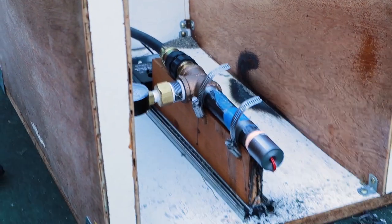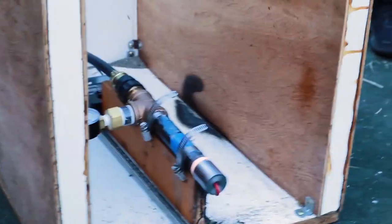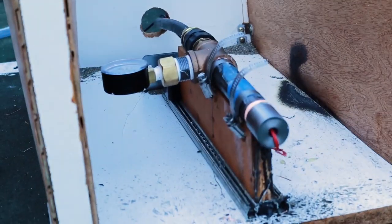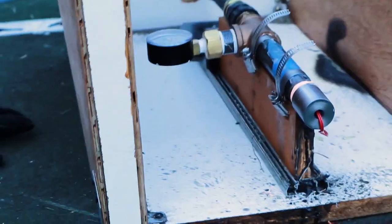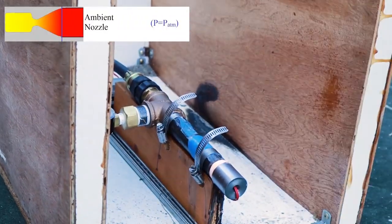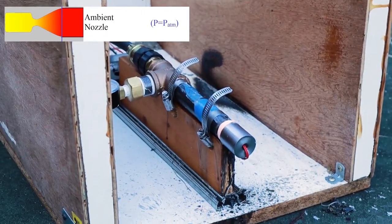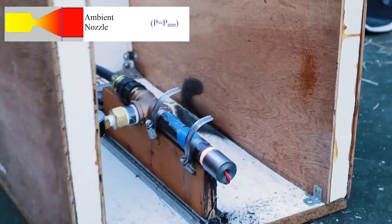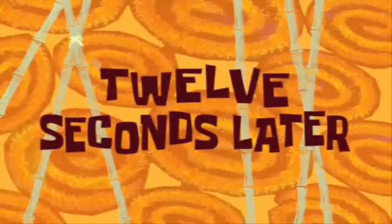Okay, this is trial seven with the theoretically perfectly expanded nozzle that goes directly, purportedly completely straight. It's 100 kilopascals. So it should have, in theory, the highest specific impulse. Let's see how that goes. Twelve seconds later.